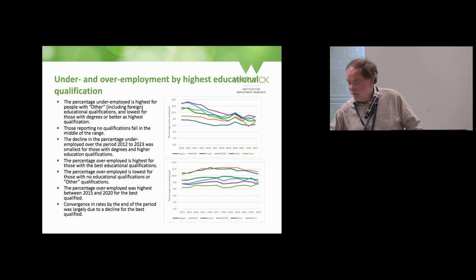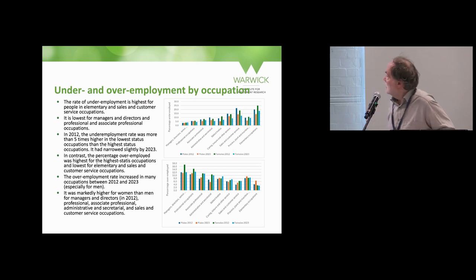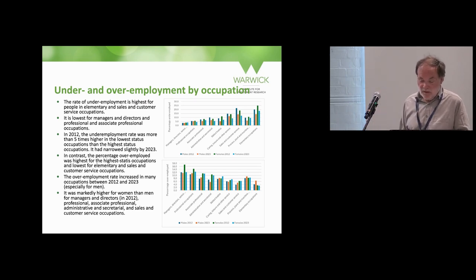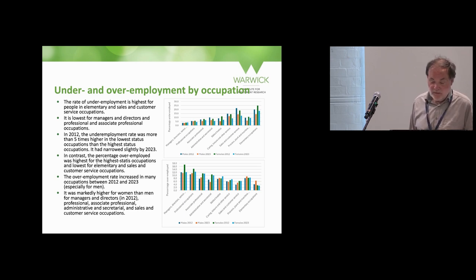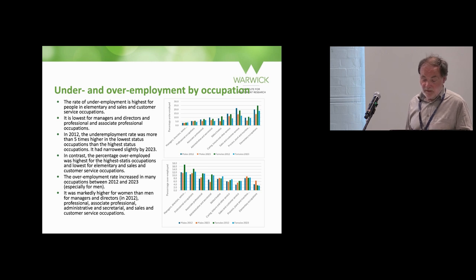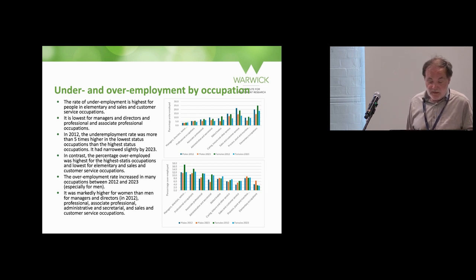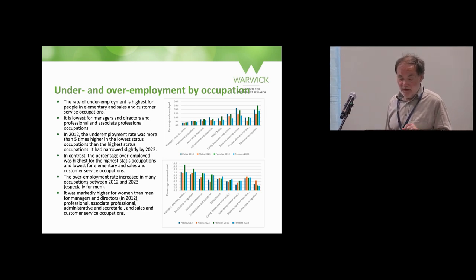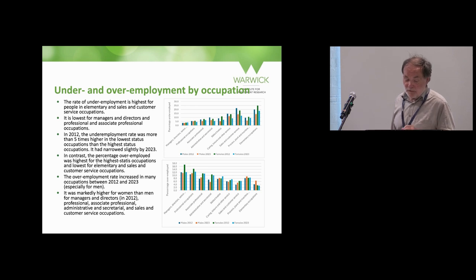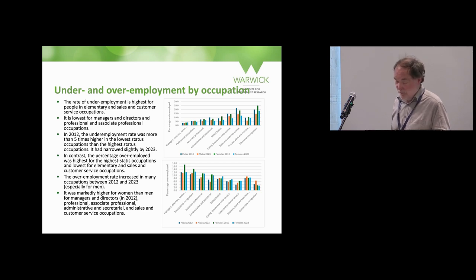Moving on to occupation — contrasting by occupation groups. Underemployment rates vary with the hierarchy of occupations, being lowest for SOC 1 to 3 and SOC 1 to 4, and highest for the sales, customer service and elementary occupations. The underemployment rate was more than five times higher in lowest status occupations compared to higher status occupations in 2012, but that differential narrowed slightly by 2023. The percentage overemployed, in contrast, was highest for higher status occupations and lowest for elementary and sales and customer service occupations.